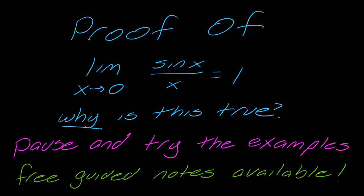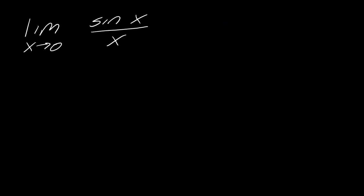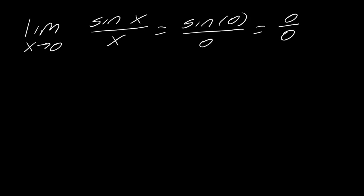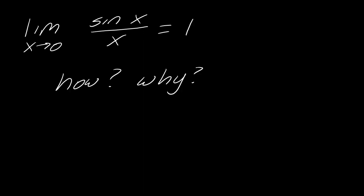Hey guys, in this video I'm going to prove the limit as x approaches 0 of sine of x over x equals 1. So proving it means why is this actually true, what is the math that goes into this. This is kind of a surprising result — it's actually a theorem. It's surprising because if you plug in 0, you get 0 over 0, which we usually know is a no-no with limits. So it's kind of odd that we get 1 as the limit; that doesn't make immediate sense.